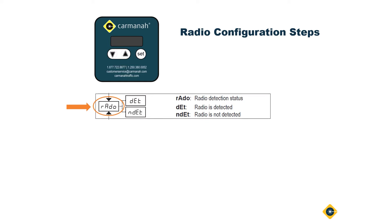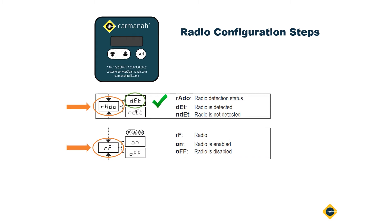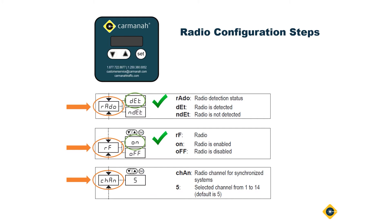First, locate the radio menu, which is abbreviated as RADO, and ensure that the radio has been detected by the system — this means a radio is installed and functional. Next, scroll to the RF setting and set RF to ON.